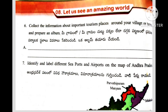Question number 6: Collect information about important tourism places around your village or town and prepare an album. This is also a student activity — students collect information on important tourism places in their village and prepare an album on that.